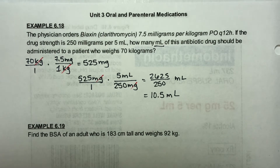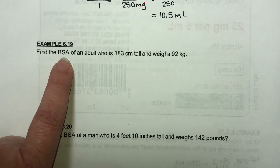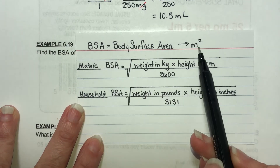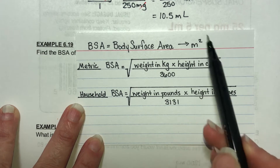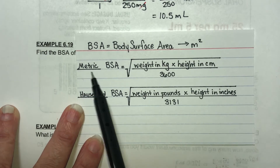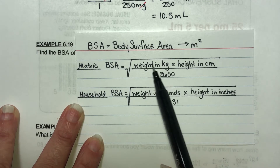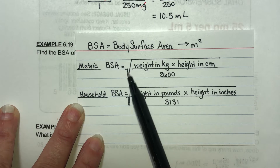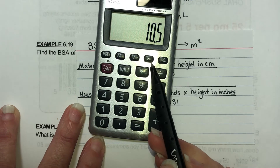For the next few problems, we need to know what BSA is. BSA is the body surface area, and we have two formulas. Body surface area is always measured in meters squared — that's an area unit. If information is given in metric units, you multiply the weight in kilograms by the height in centimeters, divide by 3,600, and take the square root. You'll need a calculator with a square root button.